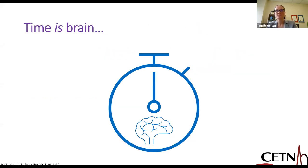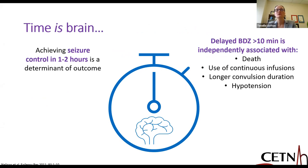Our fellow stroke neurologists are not the only ones who can claim that time is brain. We have evidence from the literature that treating status early and quickly is really important. Delays to administration of benzodiazepines greater than 10 minutes can be independently associated with poor outcomes — meaning death, hypotension, longer duration of convulsions, and the need to use continuous anti-seizure medications. Retrospective data from international studies shows that achieving seizure control in the first one to two hours is a determinant of outcome.